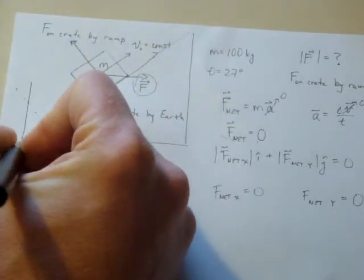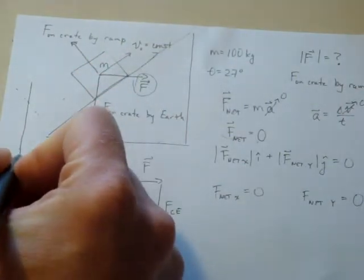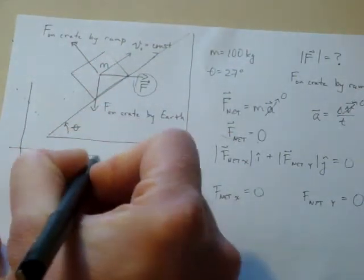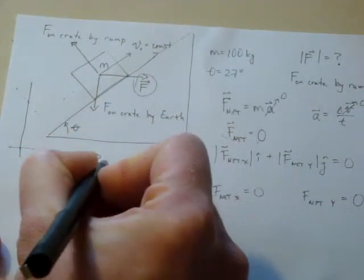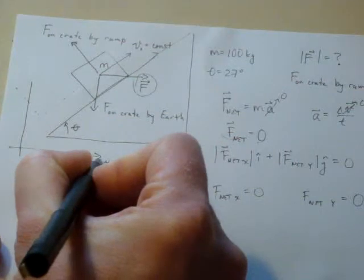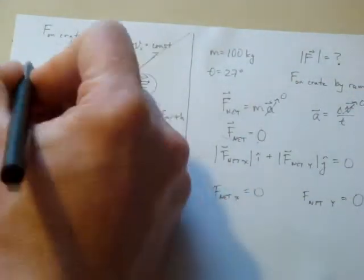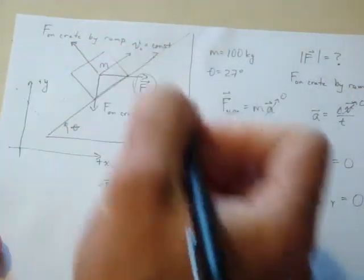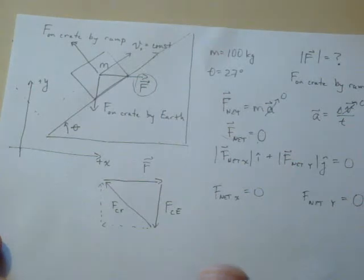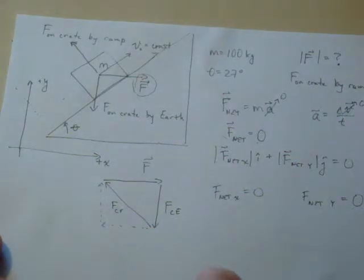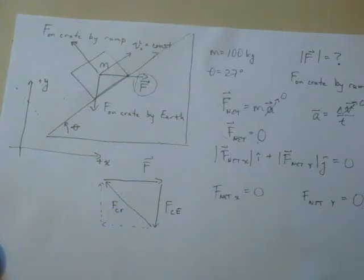I'm going to draw an axis over here as a marker to help me remember which direction is which. I'm going to call positive x to the right, and positive y vertically upward on the paper.